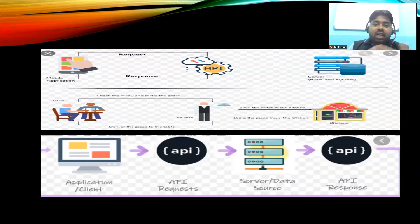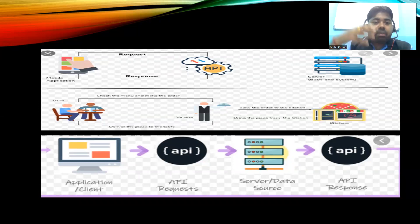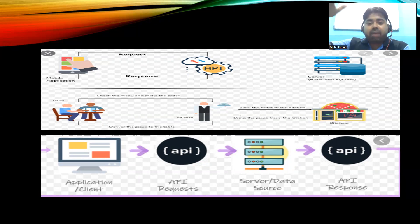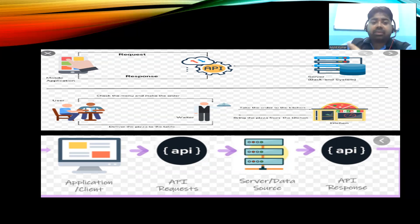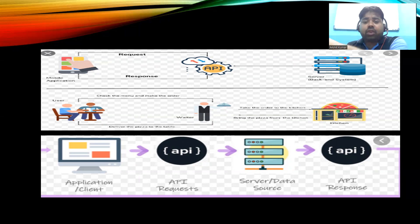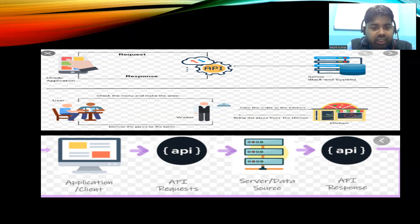Here we have a mobile application sending a request. In the middle we have an API, and when you hit a request to the back end, you get the response back. This diagram shows the full request-response cycle.